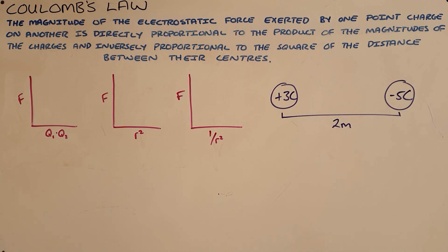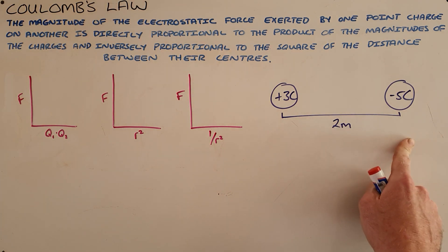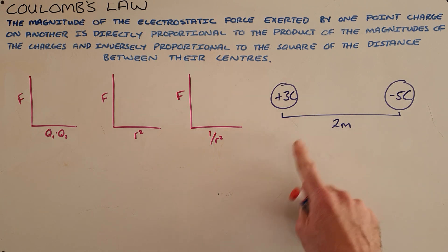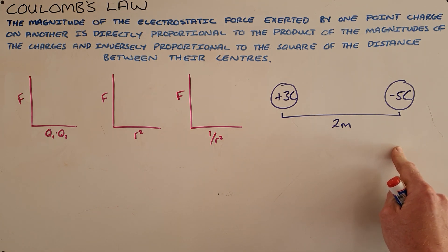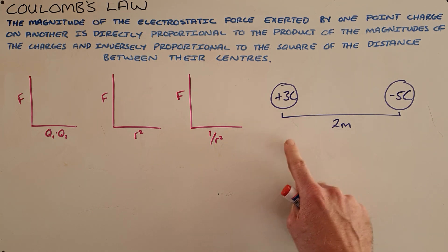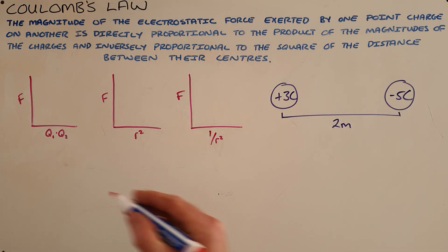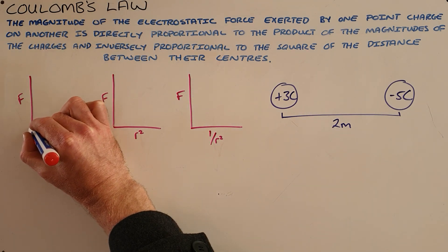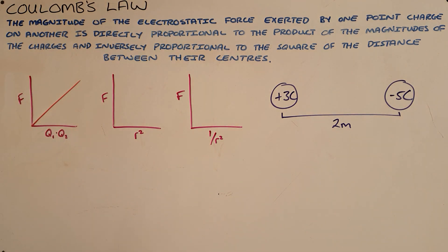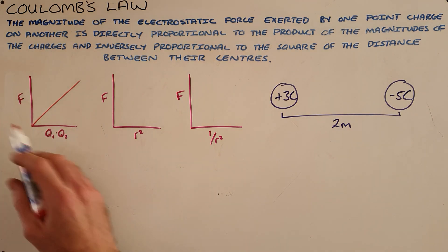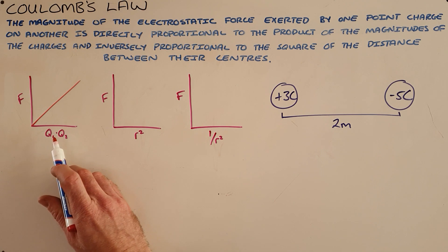For two objects separated by a certain distance, there is going to be an electrostatic force that exists between them. That force is directly proportional to the magnitude of those charges — basically saying that the bigger the charges are, the bigger the forces are, which is shown on the force versus product of charges graph.